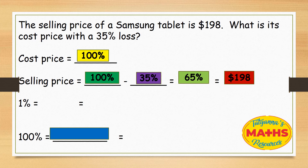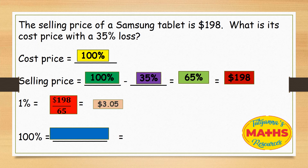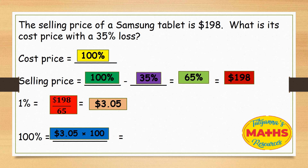Now we're going to work out 1%. This is not the only way of doing a question like this, but this is one method. To get 1%, we take $198 and divide it by 65, which gives us $3.05. So we want to figure out what is 100%, which is the cost price — the original price of the item. So we take $3.05 and multiply it by 100, which gives us $305.